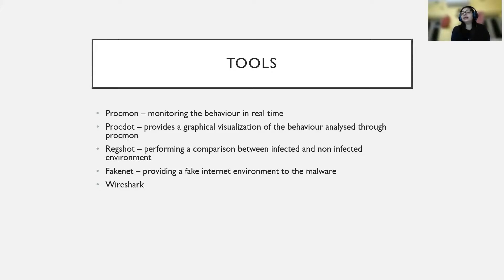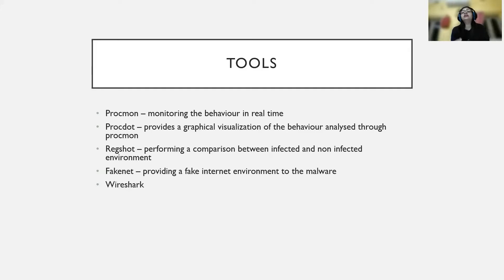Wireshark will make it easier for analyzing the network connections that the malware is making. There are different tools you can use for storing network connections — for example, you can save logs generated from FakeNet in the .pcap extension used by Wireshark. You can open those in Wireshark and check the connections, what URLs or IP addresses it is connecting to, and what kind of details are being shared or requested from that external server.